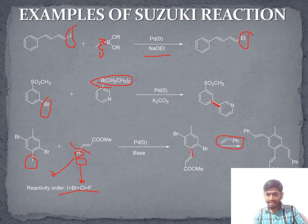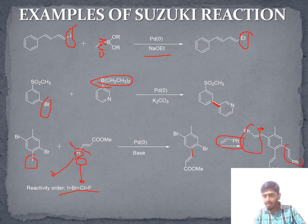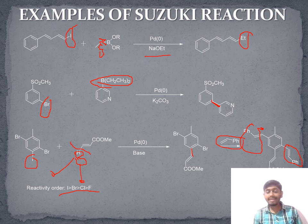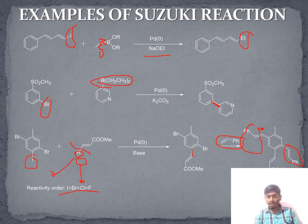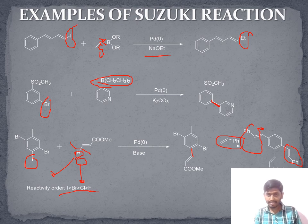After the first bond formation at the iodine position, if we treat with another group, that will replace the two bromine atoms. So this was the interesting example of Suzuki coupling reactions.